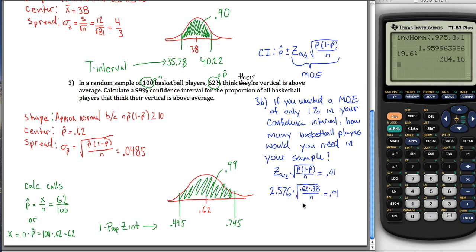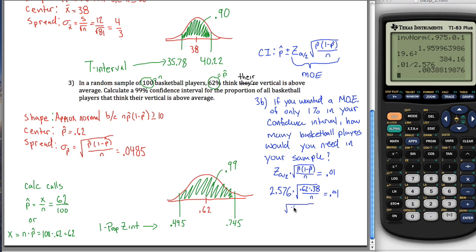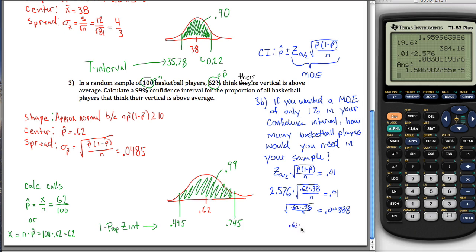If you algebraically manipulate this, one way would be to do 0.01 divided by 2.576. That gives you a certain number, so the square root of (0.62 times 0.38 divided by N) is equal to approximately 0.00388. If you then square both sides of the equation, you get 0.62 times 0.38 divided by N equals approximately 0.0000001507, which is in scientific notation — move the decimal five places to the left.